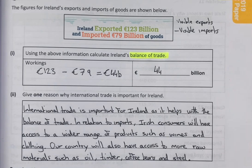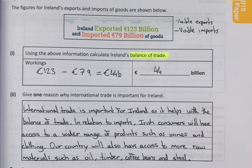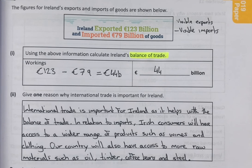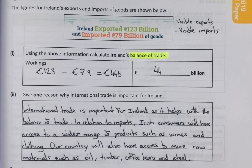Specialised hardwood timbers that we can't grow in Ireland can be imported. And likewise, coffee beans. So all of these things are very, very important for Ireland, and that is why it is very important to have international trade.